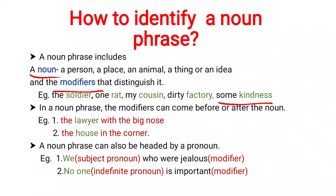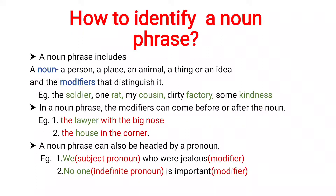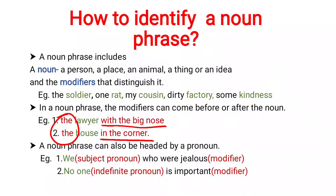Secondly, we need to know that in a noun phrase the modifiers can come before or after the noun. As you can see in the examples: 'the lawyer with the big nose' and 'the house in the corner'. In these two examples, lawyer and house are the nouns, preceded by the modifier 'the' and succeeded by other descriptive words — 'with the big nose' and 'in the corner'. So a modifier can come before or after the noun.